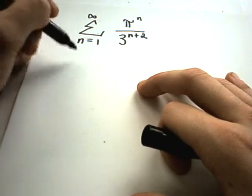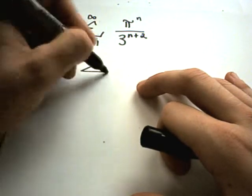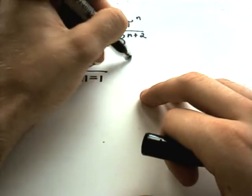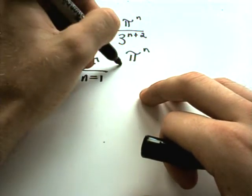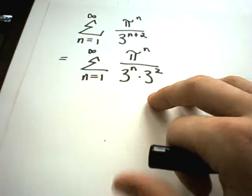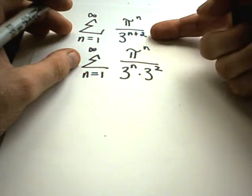Suppose I have pi raised to the n over 3 raised to the n plus 2 power. Well, in this case, I'm going to try to make it look more like a geometric series. So I want a single number raised to a power. I'm going to write, so I've still got pi to the n on top. I'm going to write this as 3 to the n times 3 squared. I've got like bases. If I add up the exponents, I'll get n plus 2.